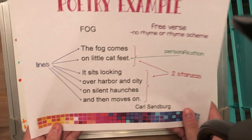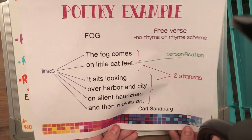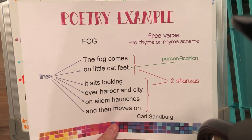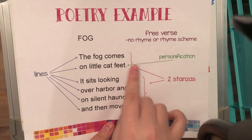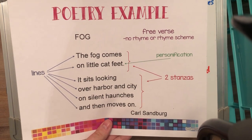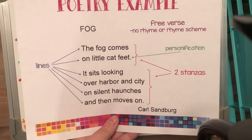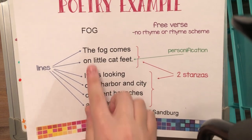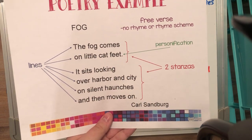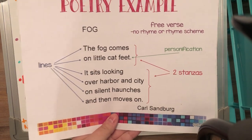Here's an example of a piece of poetry — something simple for us to understand. This poem is talking about fog. It's free verse, so there's no rhyming or rhyme scheme. There's personification because it says the fog comes on little cat feet — fog can't come on little cat feet. These are all lines right here, this is a stanza, and here's another stanza. Remember, each line is called a verse.